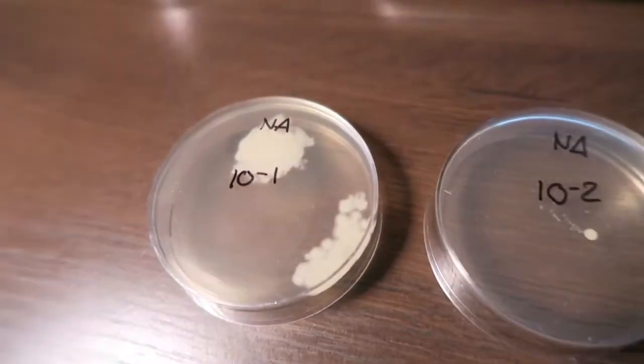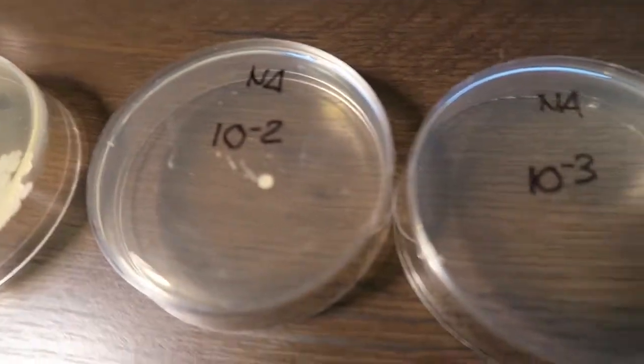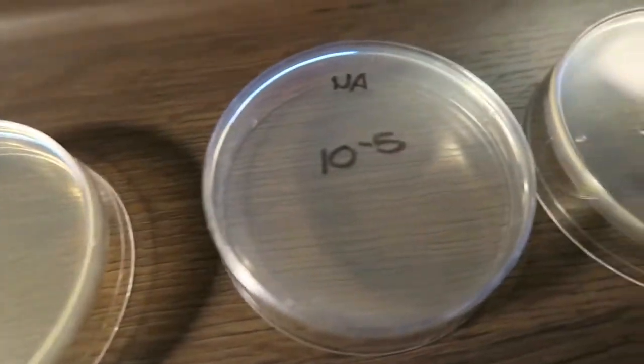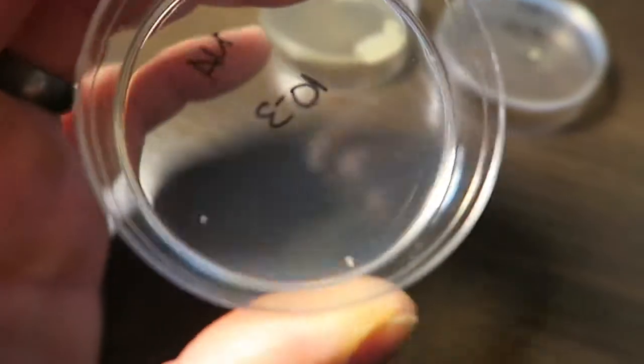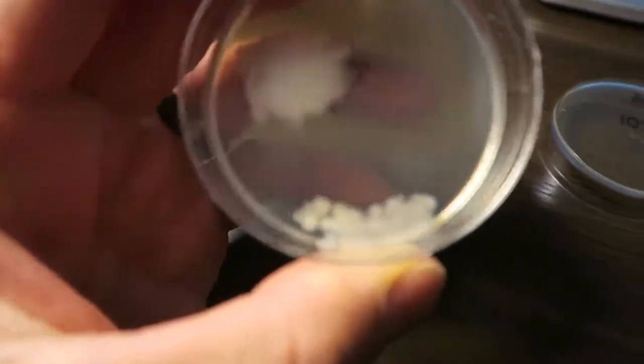So here are plates one, two, three, four, five, and six. I think there's like one microorganism over there and another one on the other edge right here. And then just a couple on plates four, five, and six. I don't know what happened here.